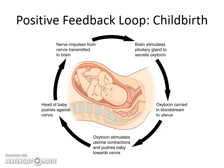The baby stimulates the gland to secrete oxytocin when it's ready to come out. Oxytocin is carried through the bloodstream to the cervix, which causes it to contract and squeeze and push. The head of the baby comes out, and as soon as the head comes out, the baby is no longer pushing on the cervix, and the oxytocin stops. That's how the positive feedback loop ends.